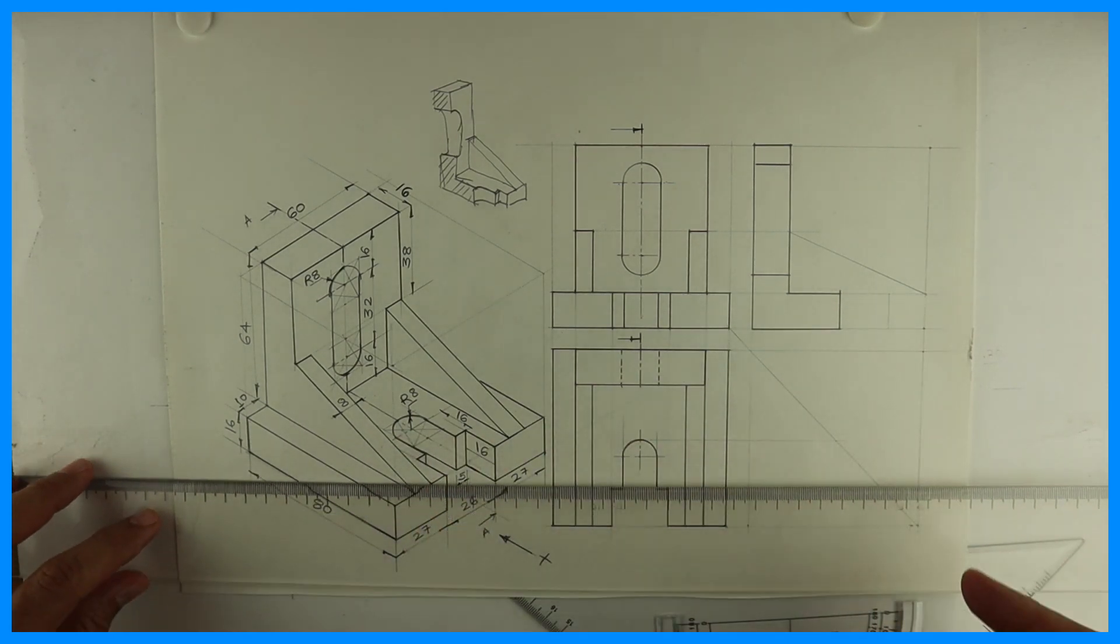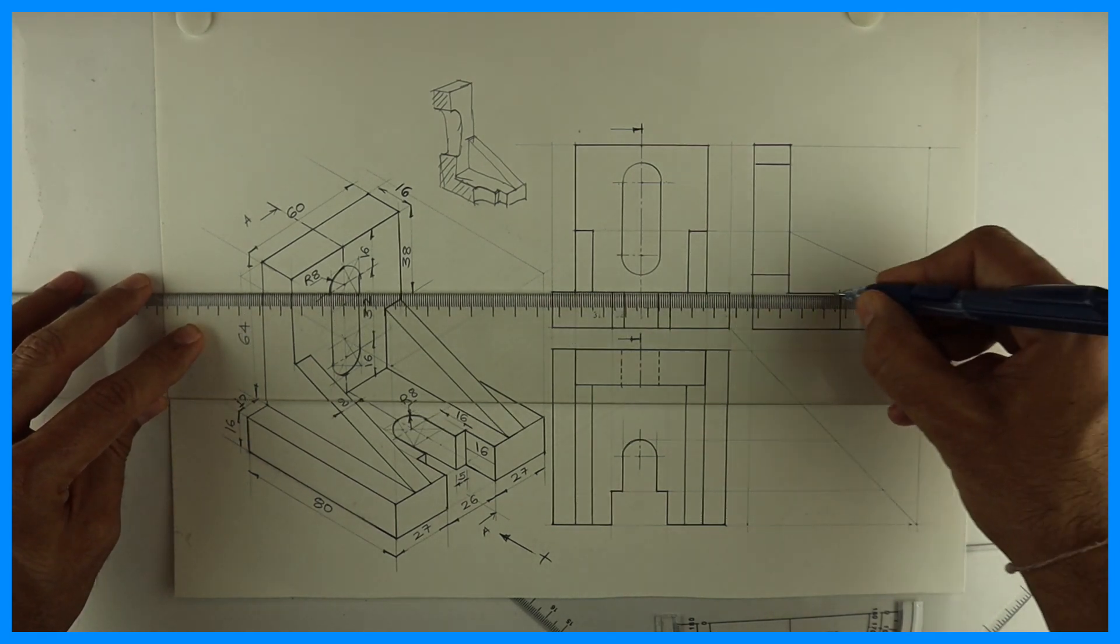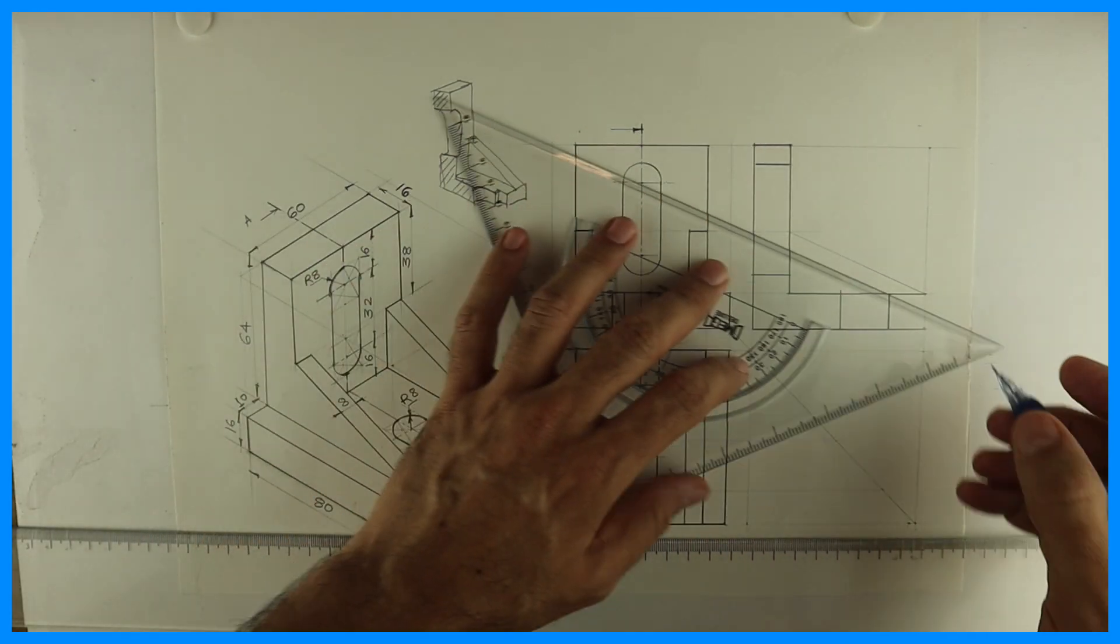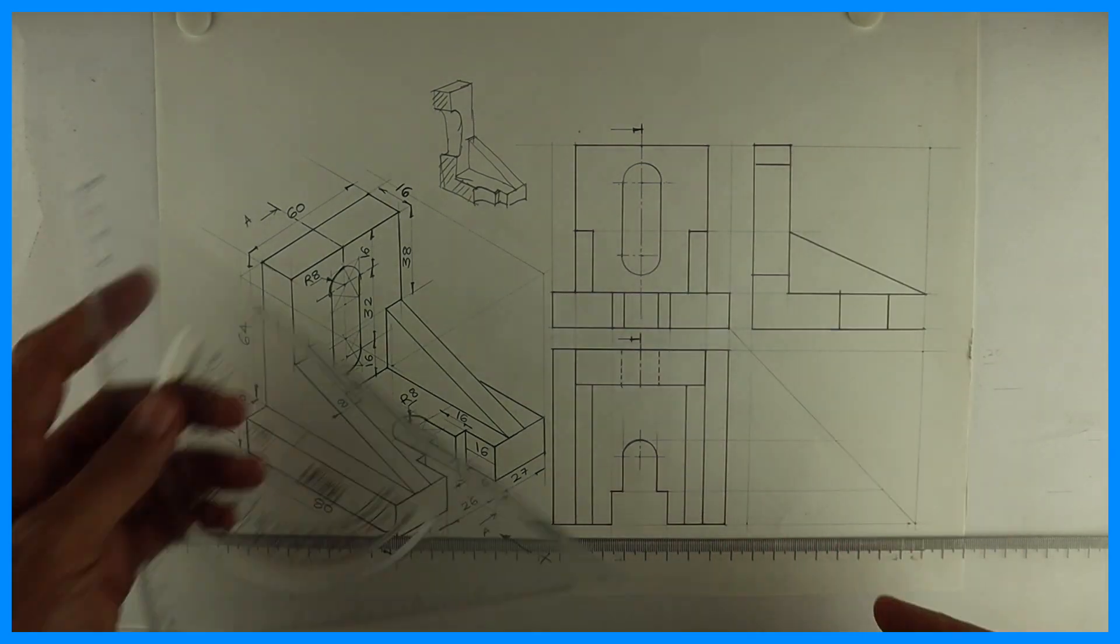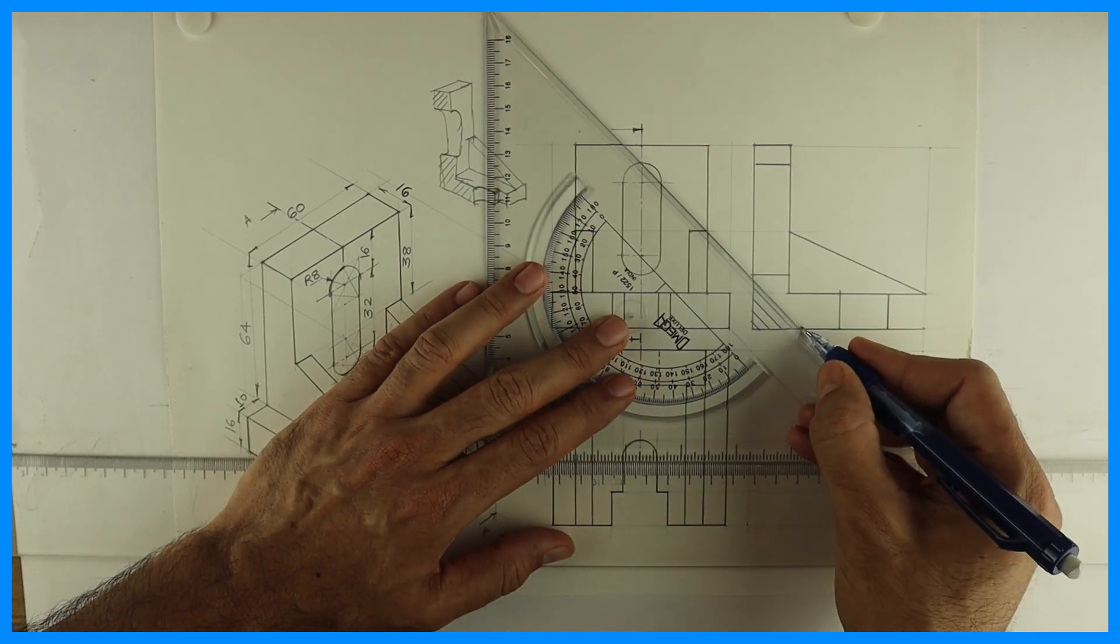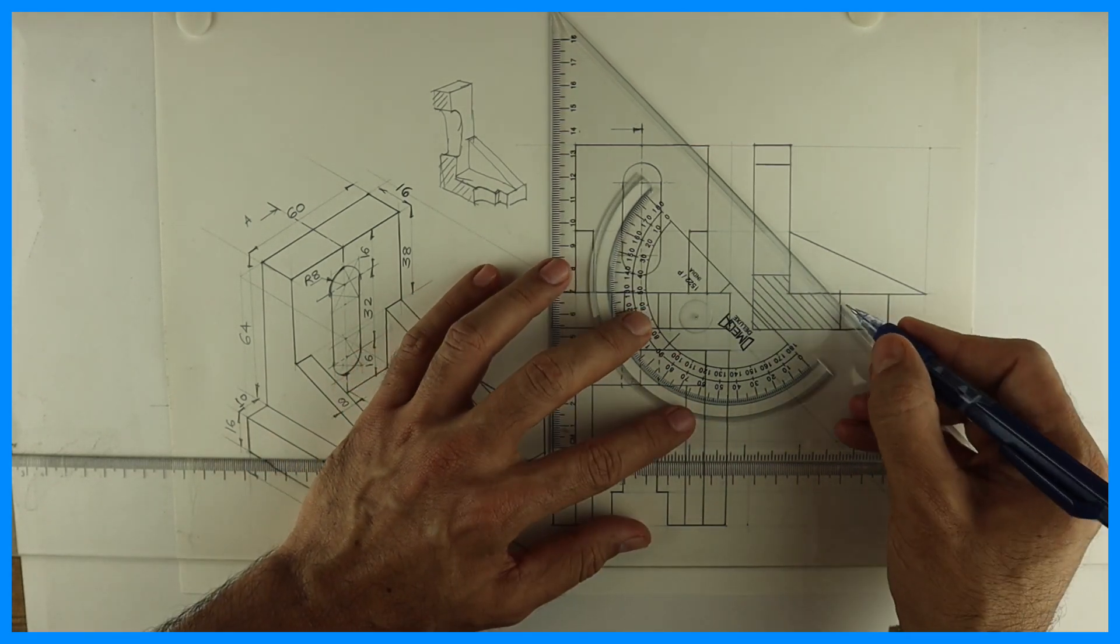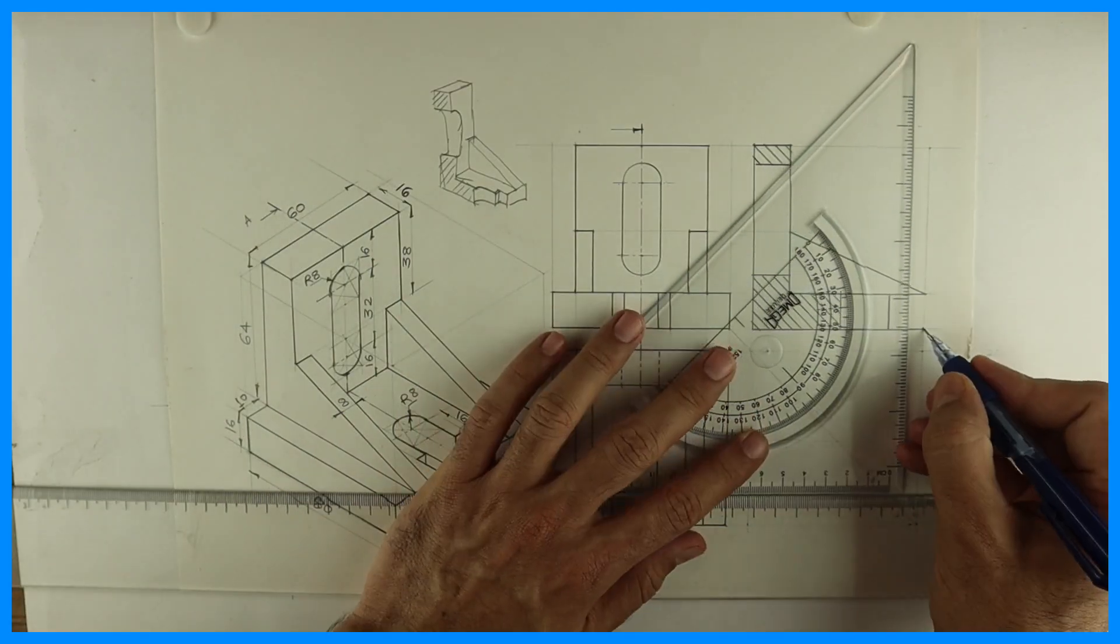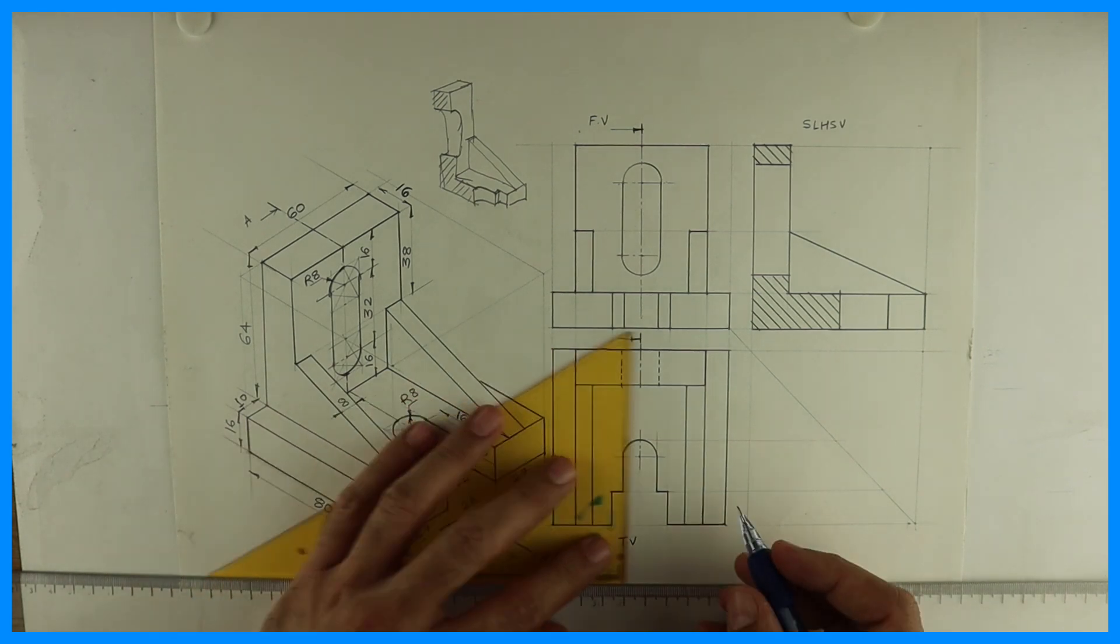Now this portion will be visible and it will be dark, but there won't be any hatching. Why? Because we are not cutting it. If you see, the cutting plane line is not cutting that part. So that's why it won't be hatched. And this also won't be hatched. This slope. Because it is not getting cut. See this. Now wherever there is section, I am doing section. This part will get hatched and this part. The remaining part won't be getting hatched. Now we can do labeling and dimensioning. Thank you.